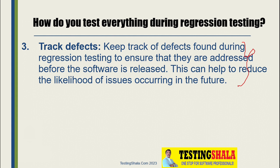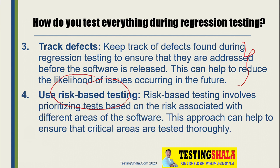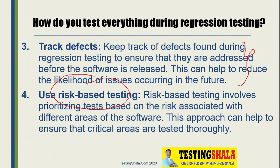The fourth aspect is the use of risk-based testing. We already prioritized test cases, but here we do a further prioritization based on the risk associated with each test case. Even after prioritizing we may still have thousands of test cases, so we cannot execute all of them. Based on the risk-based approach, we can pick the right test cases to execute.